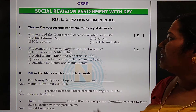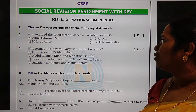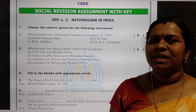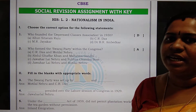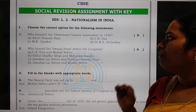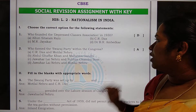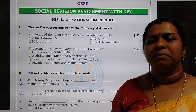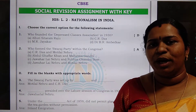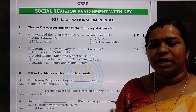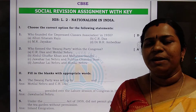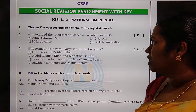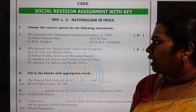Who founded the Depressed Classes Association in 1930? The Depressed Classes Association in 1930 was founded by Dr. B.R. Ambedkar — Bhimrao Ambedkar — who belongs to a Dalit family or a depressed family. He founded the Depressed Classes Association.